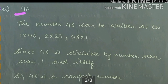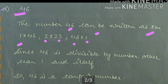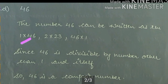Next part: 46 can be written as 1 into 46, 2 into 23, and 46 into 1. So 46 is divisible by 1, 2, and other factors.